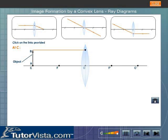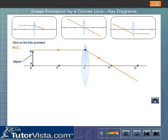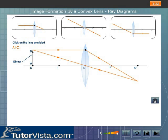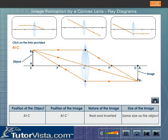Formation of image when the object is placed at C. A ray of light parallel to the principal axis after refraction passes through the focus F'. A ray of light passing through the optical center of the lens travels straight without suffering any deviation. These refracted rays meet at C'. Thus, when an object is placed at C of a convex lens, a real, inverted image of the same size is formed at C' on the other side of the lens.